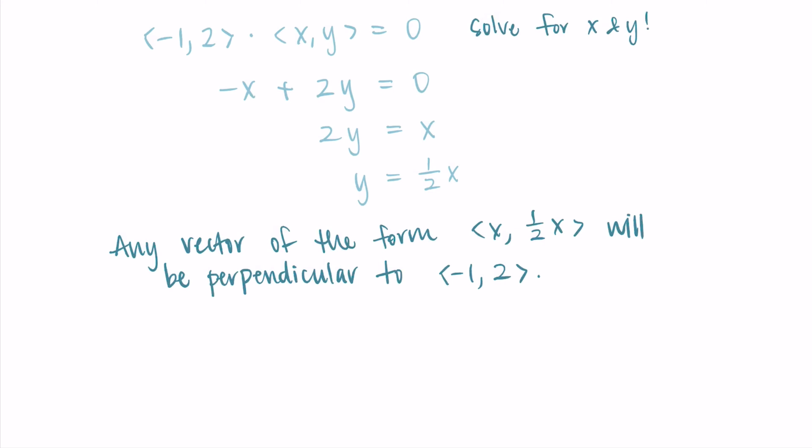So we took this dot product with an arbitrary x and y, we set it equal to 0, and we found out that anything of this form x, 1 half x will have a dot product of 0 with the vector negative 1, 2.